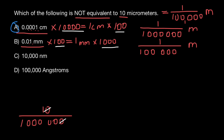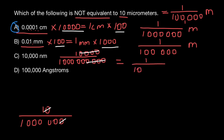Let's check variant C: 10,000 nanometers. What does nano mean? Nano means one billionth of something — in this case, one divided by one billion. We have 10,000, so we place four zeros in the numerator and cancel four zeros from the denominator. That leaves one divided by 100,000 of a meter. So 10,000 nanometers equals 10 micrometers — we are not circling this answer.